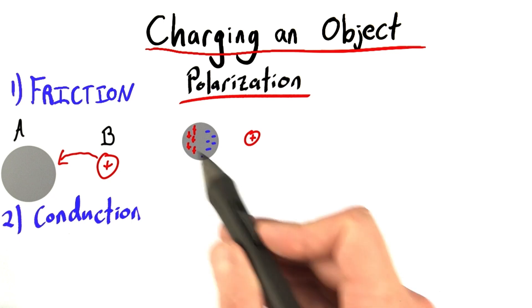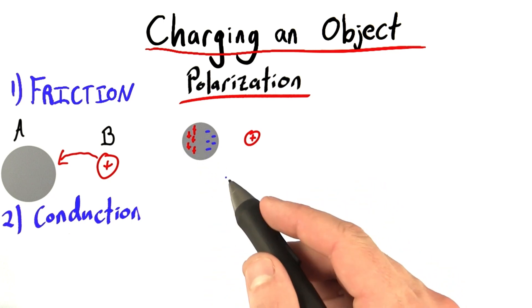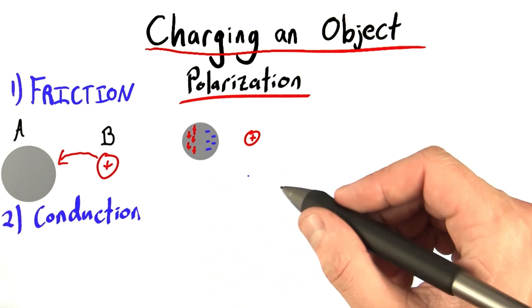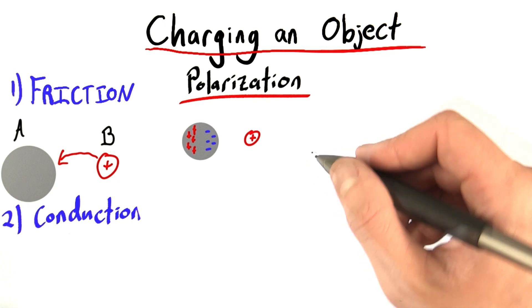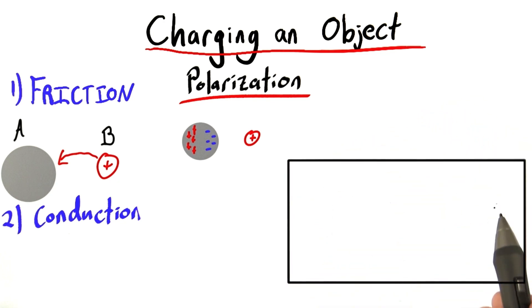You can start to see here that it looks like there should be a way to create something that's charged here. Maybe one, maybe two objects that are charged. But I leave it up to you to enter into this box what you think would be the best way to create charged objects using this polarization idea.